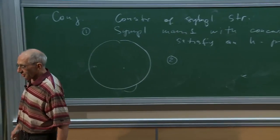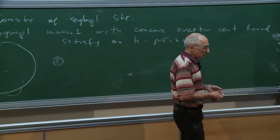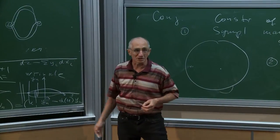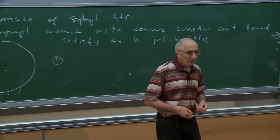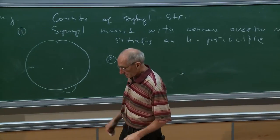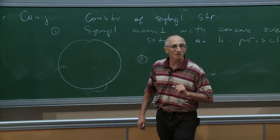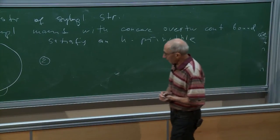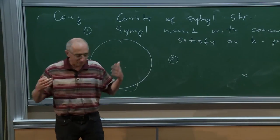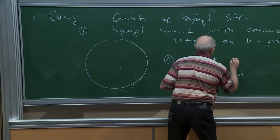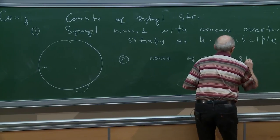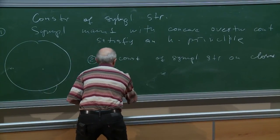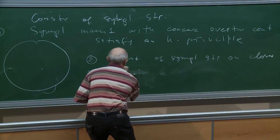I'm pretty sure this is true in four dimensions and I have a sketch, but I think it's true in all dimensions. Second conjecture: while the extension problem for symplectic structure has extra obstructions, the construction of symplectic structure on a closed manifold in dimension greater than four should have no obstruction beyond the obvious ones. Even in dimension four it should have no abstraction beyond some obvious counterexample.